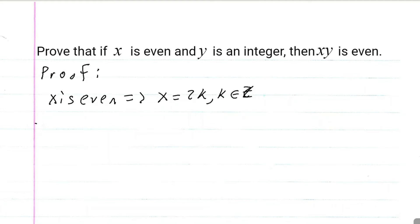This implies that x times y is equal to 2k times y, which is equal to 2ky.